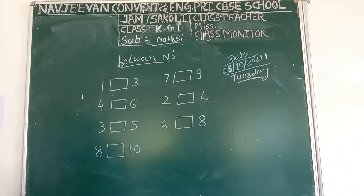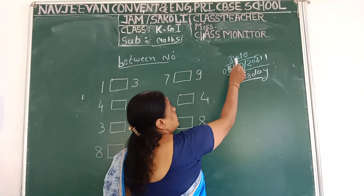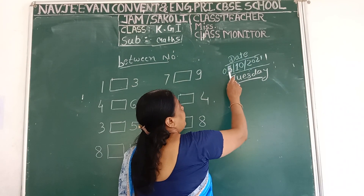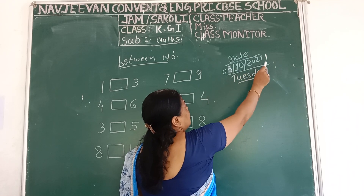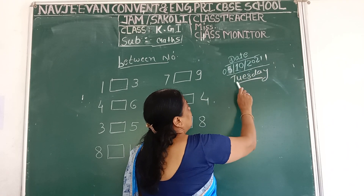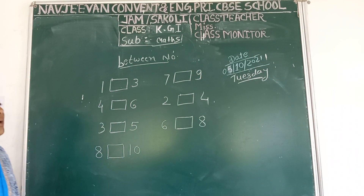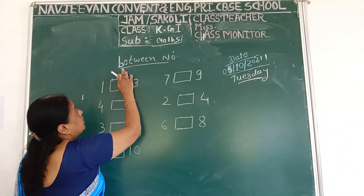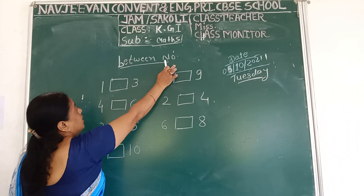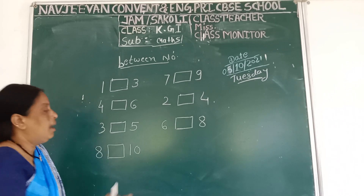Good morning all of you. Today is the 5th October 2021. Today is Joseph. We are going to learn between numbers. Between number.